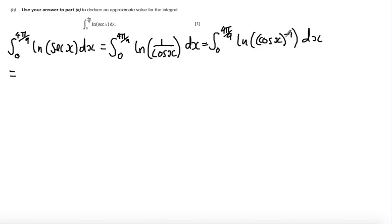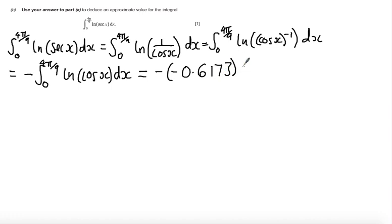Using the laws of logs, I can bring the minus down in front of the log. So the integral from 0 to 4π/9 of log(sec x) dx = -∫log(cos x) dx. Using my answer from part A, which was -0.6173, the value of this integral is 0.6173.